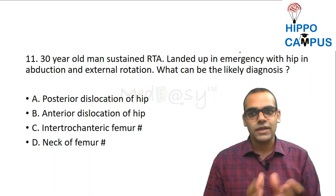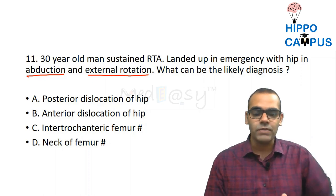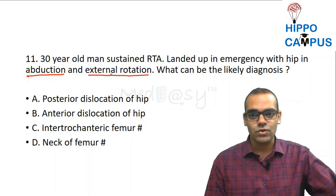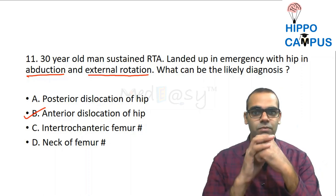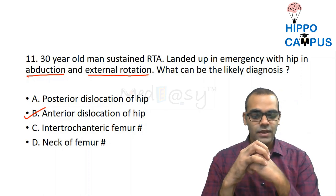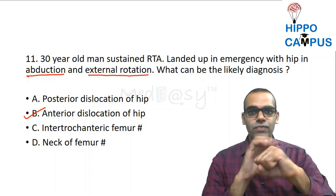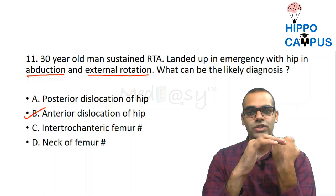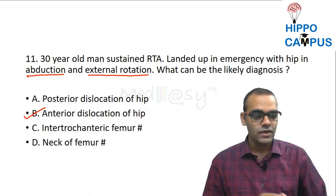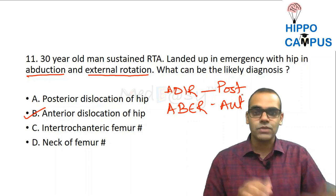Question 11: A 30-year-old male sustained a road traffic accident and presented with the hip in abduction and external rotation. The likely diagnosis is anterior dislocation of the hip. With abduction and external rotation, the femoral head moves anteriorly out of the acetabulum. Conversely, with adduction and internal rotation, the head goes posterior.